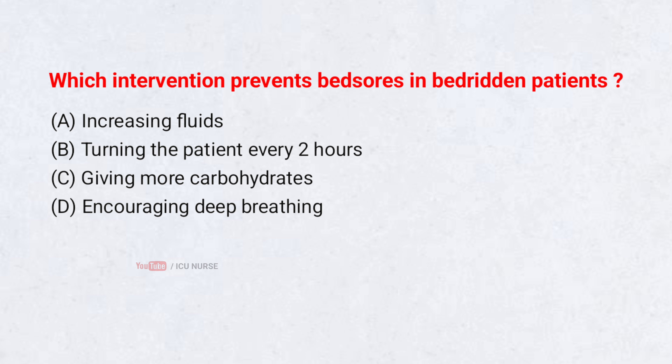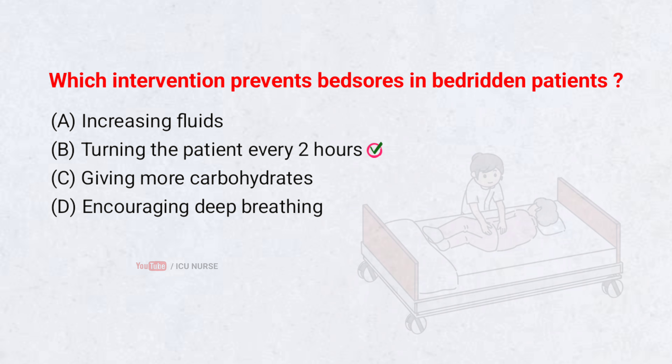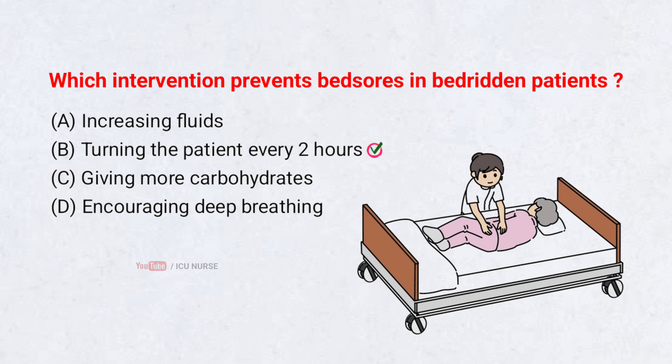Which intervention prevents bed sores in bedridden patients? A. Increasing fluids. B. Turning the patient every 2 hours. C. Giving more carbohydrates. D. Encouraging deep breathing. Correct answer: B. Turning the patient every 2 hours. Repositioning prevents continuous pressure on bony areas, reducing the risk of pressure ulcers.